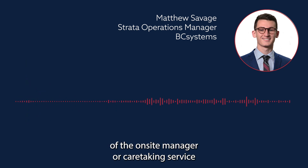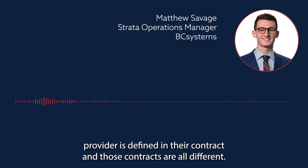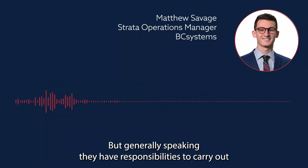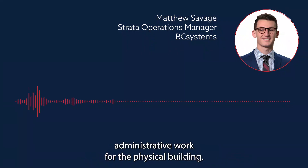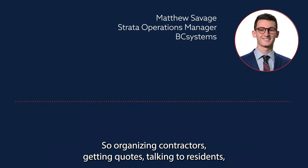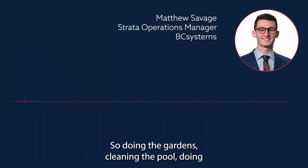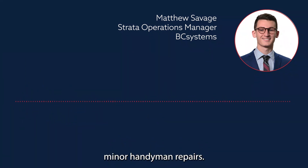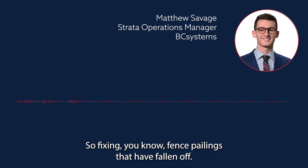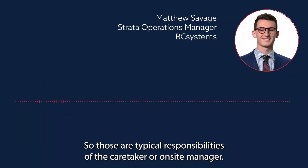The role of the on-site manager or caretaking service provider is defined in their contract. Those contracts are all different, but generally speaking, they have responsibilities to carry out administrative work for the physical building — organising contractors, getting quotes, talking to residents, monitoring bylaws, and also carrying out work such as doing the gardens, cleaning the pool, doing minor handyman repairs like fixing fence palings that have fallen off. Those are typical responsibilities of the caretaker or on-site manager.